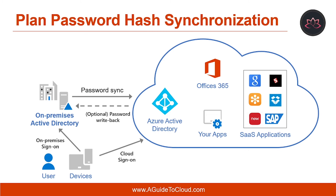How can you plan Azure AD Connect password hash synchronization? With password hash synchronization, hashes of user passwords are synchronized from on-premises Active Directory to Azure AD. When passwords are changed or reset on-premises, the new password hashes are synchronized to Azure AD immediately so that your users can always use the same password for cloud resources and on-premises resources. The passwords are never sent to Azure AD or stored in Azure AD in clear text. You can use password hash synchronization together with password writeback to enable self-service password reset in Azure AD. In addition, you can enable seamless single sign-on for users on domain-joined machines on the corporate network. With single sign-on enabled, users only need to enter a username to securely access cloud resources.